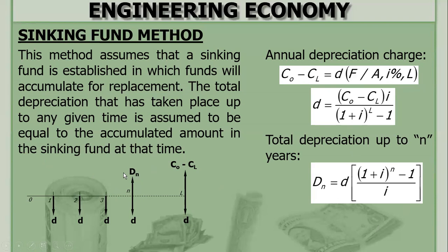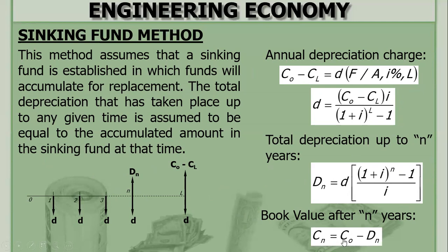After solving for total depreciation D sub N, you can solve for the book value. The formula is the same as in the straight-line method: C sub N equals CO minus D sub N. So the procedure is the same: first, solve for the annual depreciation charge, then total depreciation, then book value. Let us solve some problems.